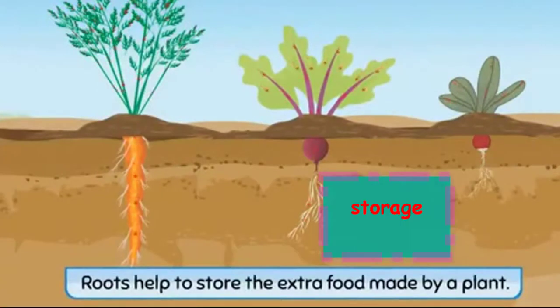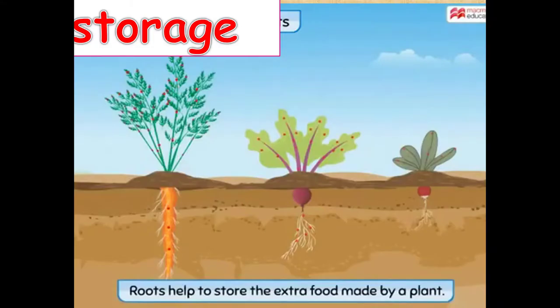Roots of many plants such as carrot, beetroot, and radish also help to store the extra food made by a plant. Function number three is storage.